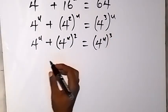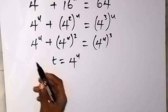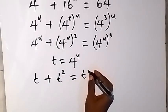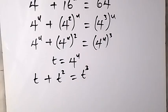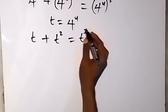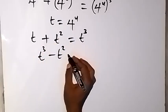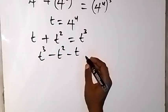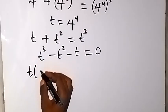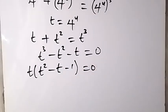We represent 4 raised to power u with a letter. Let t equal 4 raised to power u and rewrite as t plus t² equals t cubed. Rearranging to form a cubic equation, we bring everything to one side: t³ minus t² minus t equals 0. We factor out t, giving t times (t² minus t minus 1) equals 0.